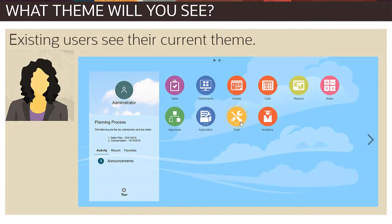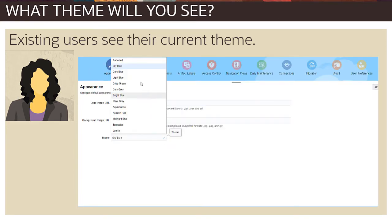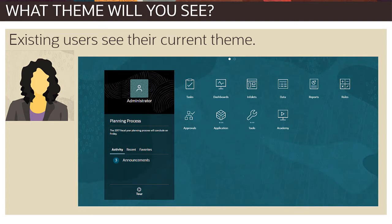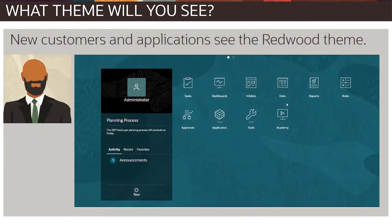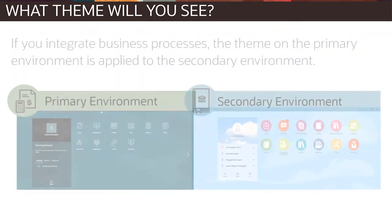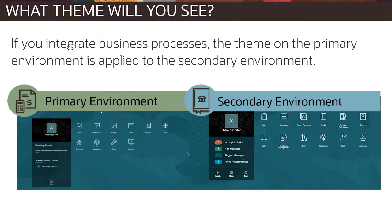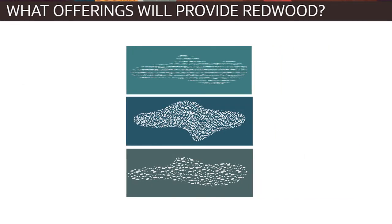So what theme will you see? Existing users continue to see their current theme, but can select the Redwood theme using the appearance card. New customers and new applications see the Redwood theme, but can also use the appearance card to switch themes. If you integrate business processes across connected environments, the theme on the primary environment is applied to the secondary environment to ensure consistency.